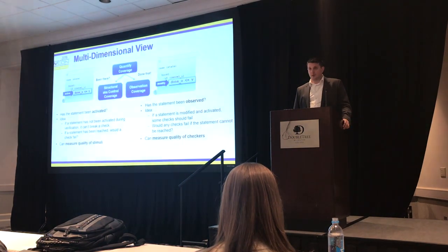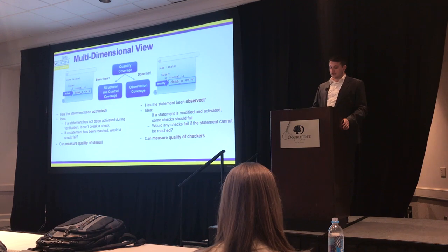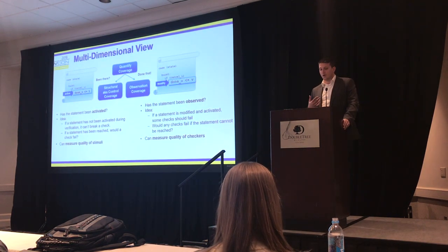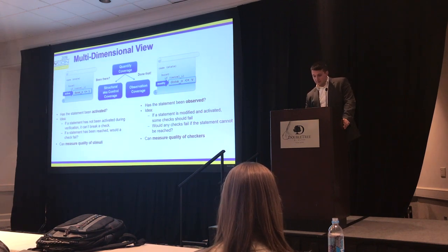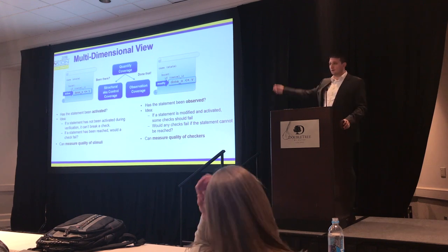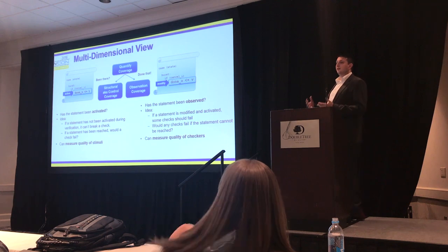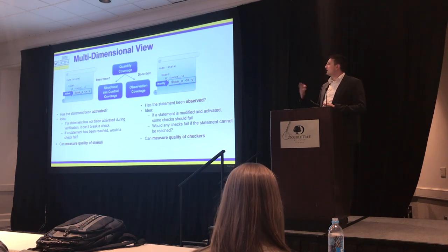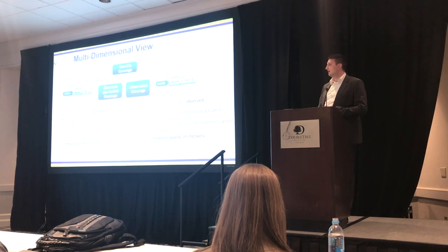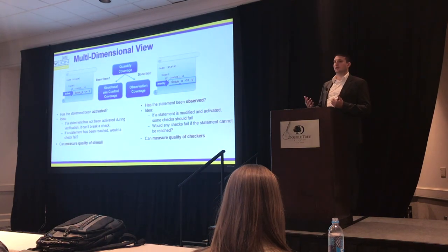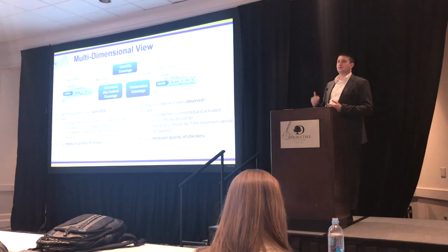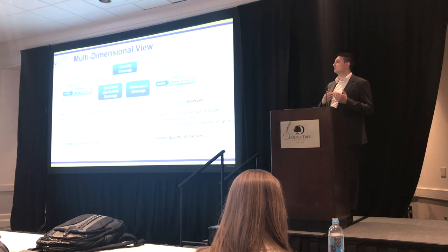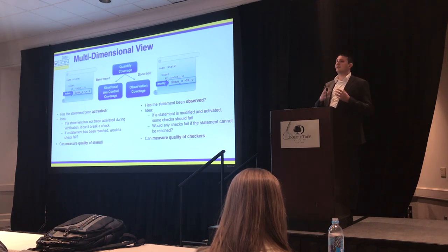On the right side, we introduce observation coverage. We ask: if a statement has been activated, are the checkers sensitive to these statements? We actually measure the quality of our checkers. The way we do that is we introduce a free variable to every assignment, which allows us to model different kinds of mutations — covering all possible mutations on all possible assignments. The question we're trying to answer is: if this specific line does something different than it usually should, would there be an assertion that would start failing? That's when we say the checker covers that particular line of code.